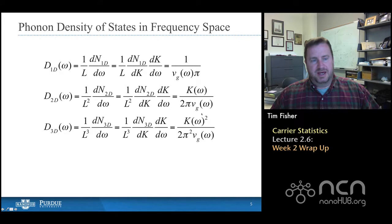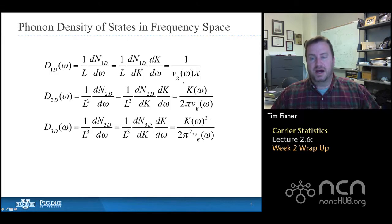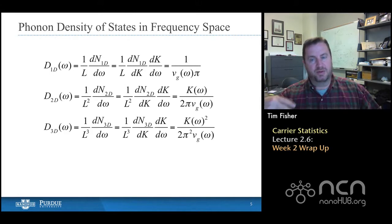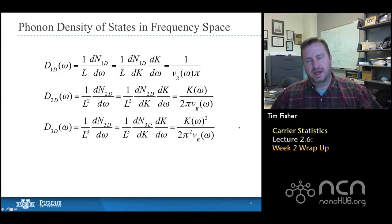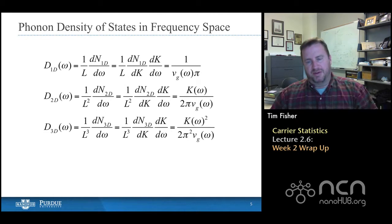What we find is that the phonon density of states in frequency space, regardless of dimension, is inversely proportional to the group velocity, and proportional to the wave vector k raised to the power of the dimensionality minus 1. So in 1D, k to the power of 0 gives a constant density of states, at least if the group velocity is constant. This gives us an idea of the dimensionality of the problem from the k exponent.